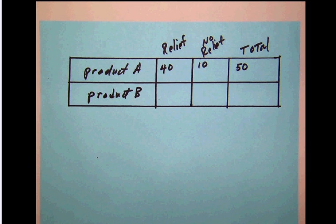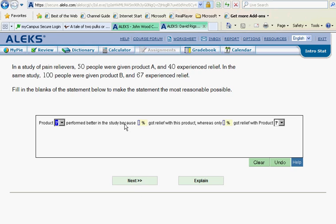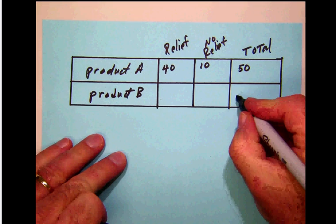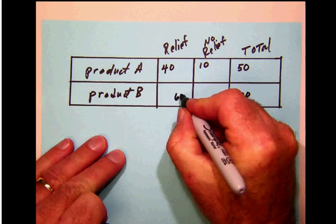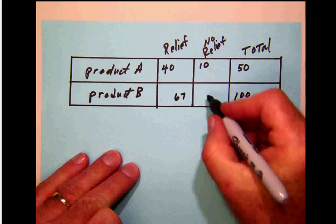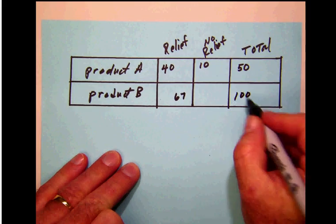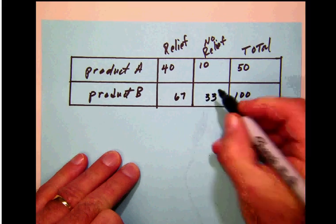Let's move on and look at the product B folks. There were 100 people given product B and 67 of them experienced relief. So we had 100 people, 67 of them getting relief, and therefore 67 from 100 is 33—33 did not.